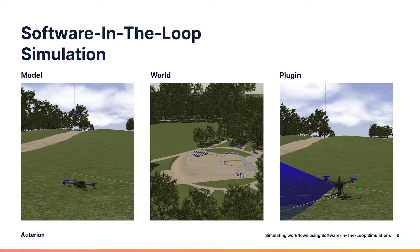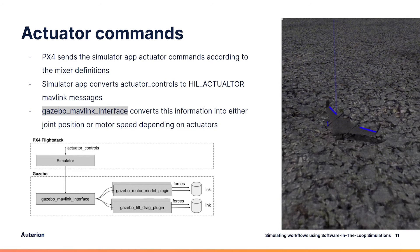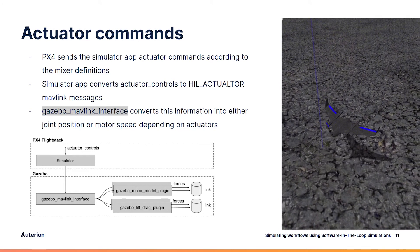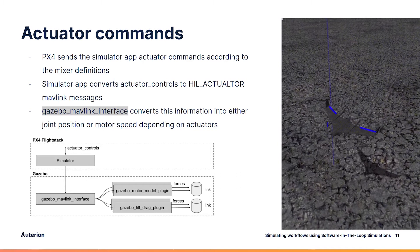Especially in Gazebo, the software-in-the-loop simulation can be broken down into three components: the model, which describes the vehicle; the plugin, which defines and configures the sensor information or the vehicle dynamics; and the world, which defines the environment the vehicle will fly in.